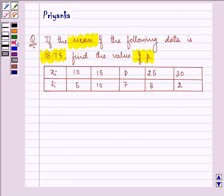Now here the data which is given to us having X as 10, 15, P, 25, 30 and frequency that is FI as 5, 10, 7, 8 and 2 respectively.